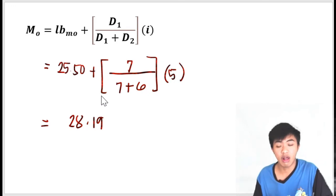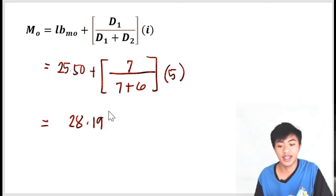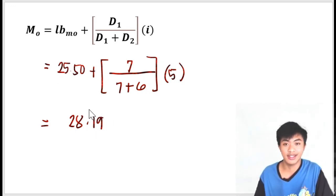So the mode of that grouped data is 28.19.